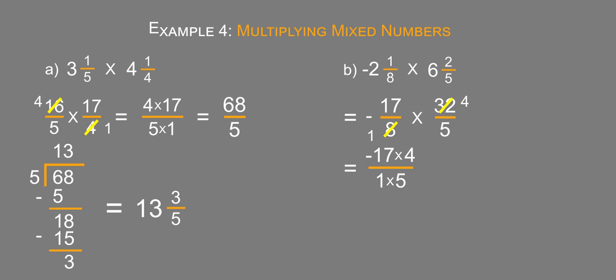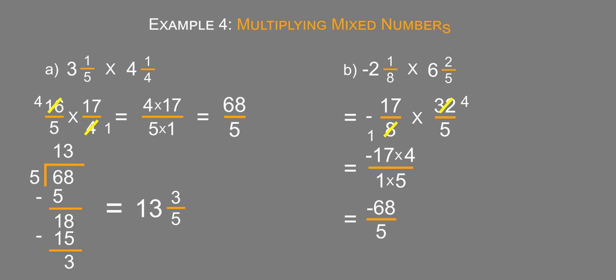This looks fairly similar to our previous problem. 17 times four we already know is 68, so this is -68 over five. And since we already know 68/5 is 13 and 3/5, the only difference is that this time we have a negative. This is -13 and 3/5.